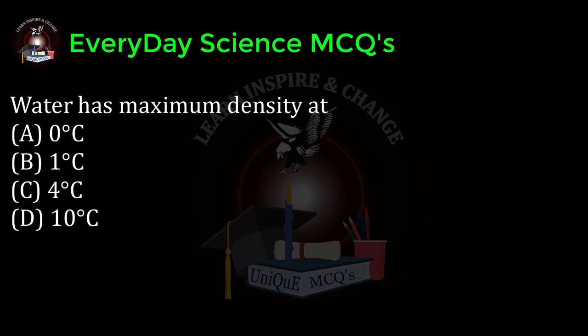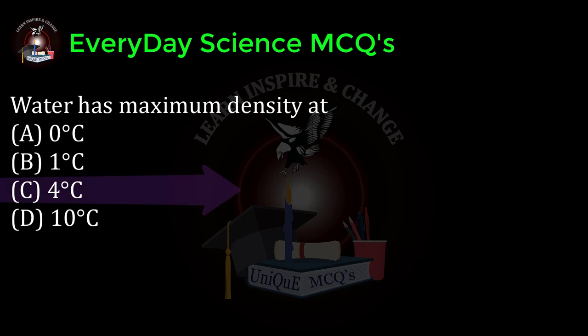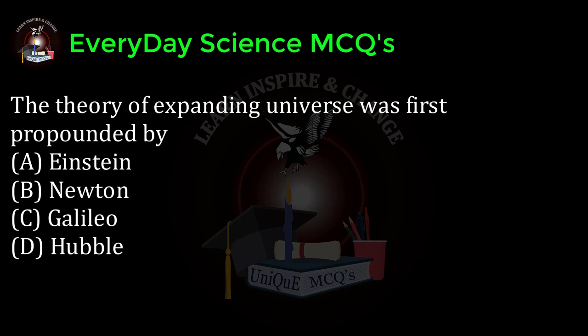Water has maximum density at: a) 0 degrees Celsius, b) 1 degree Celsius, c) 4 degrees Celsius, d) 10 degrees Celsius. Correct answer: c.